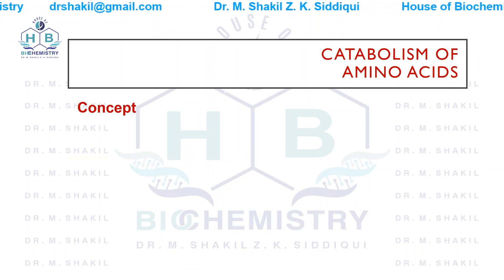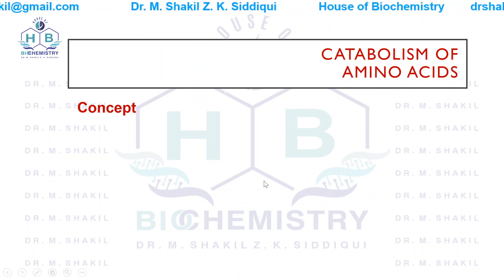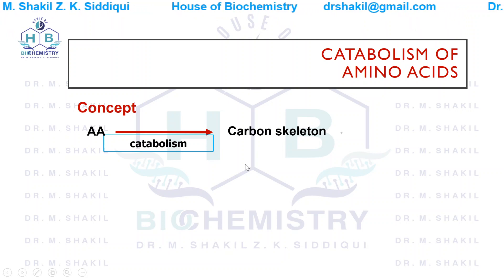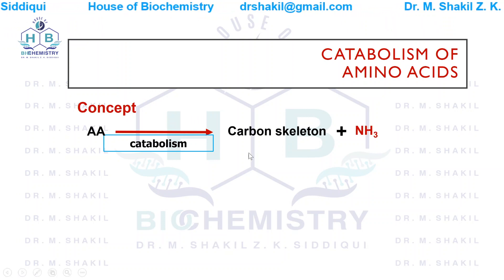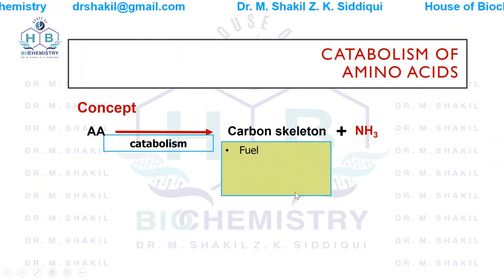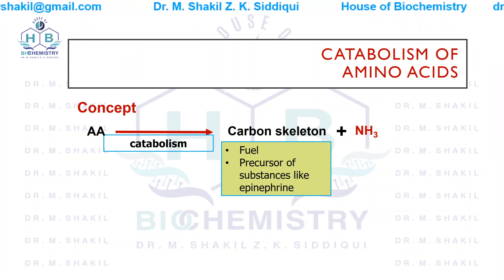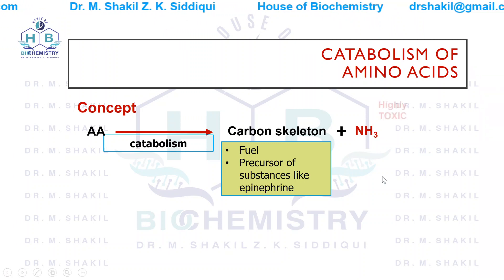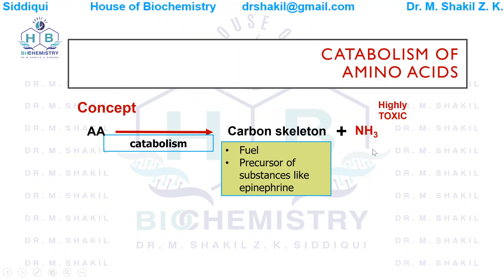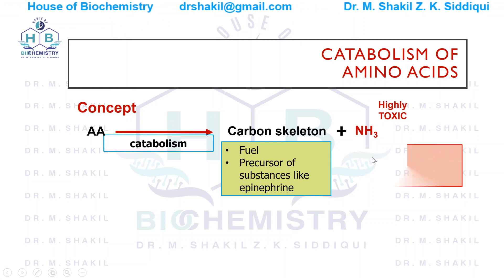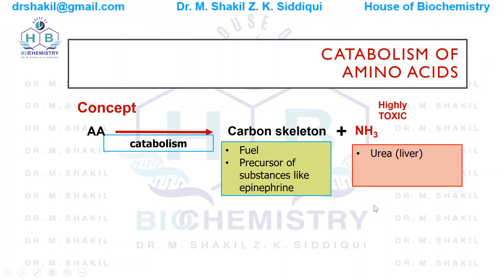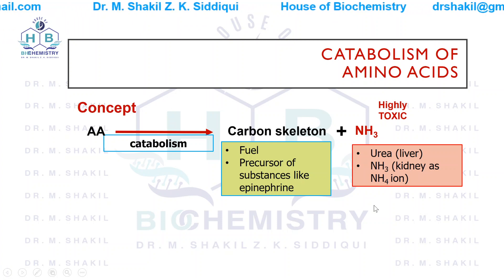Now let's look at the catabolism of amino acids. An amino acid is broken down by enzymes into a carbon skeleton plus ammonia. The carbon skeleton is used for energy as fuel and as a precursor of substances like epinephrine. Ammonia is highly toxic and can cause cerebral edema, so it must be excreted immediately. The liver converts ammonia into the less toxic substance urea, which is excreted through the kidney into the urine. Some ammonia is also secreted by the kidney as ammonium ion.